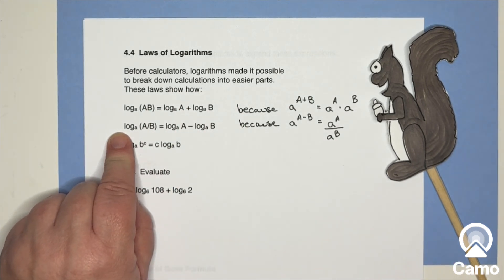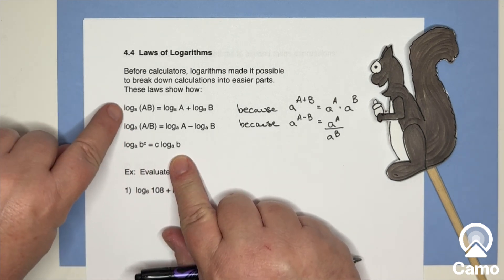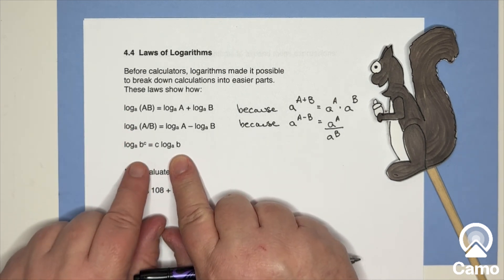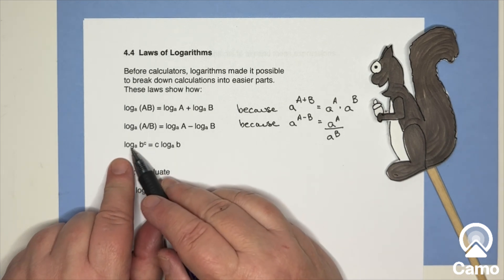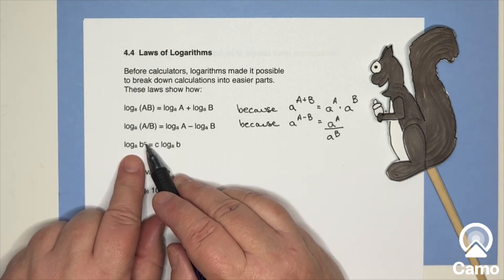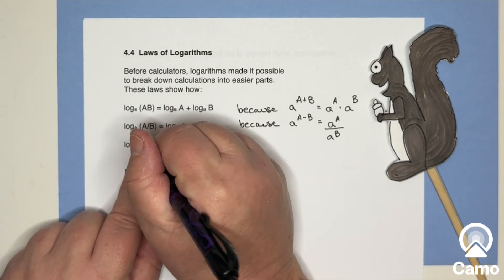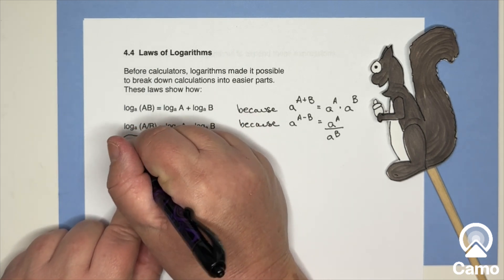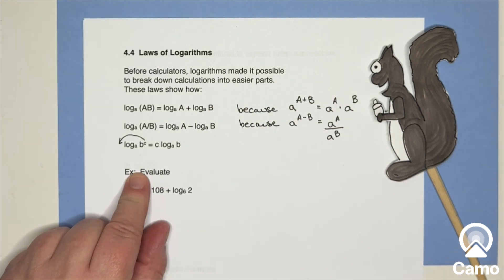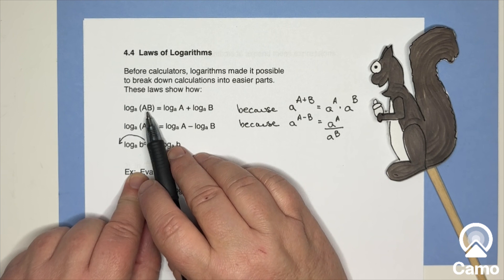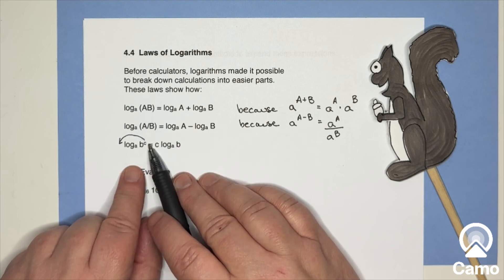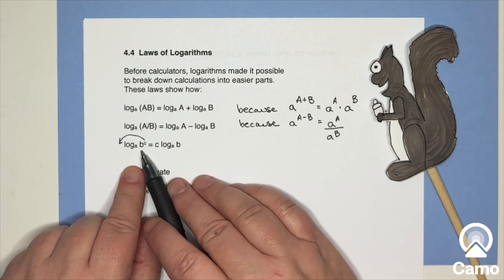Now there's another rule, and basically it comes from the first one. And that is, if you have log base a of some number to an exponent, weirdly enough, the exponent comes all the way down and sits in front of the logarithm. This is going to make things so much simpler in many cases. And this simply comes from the fact that b to the cth power is just a product of b's.